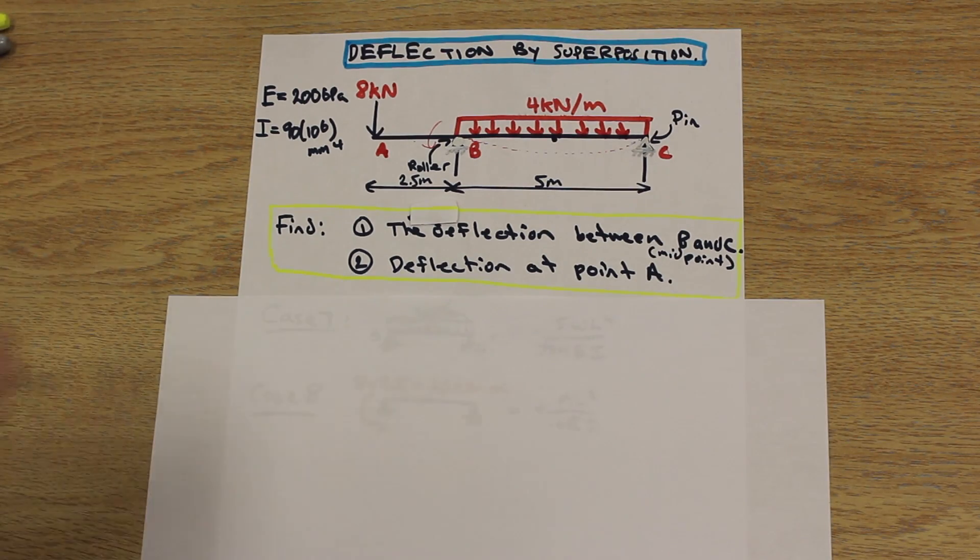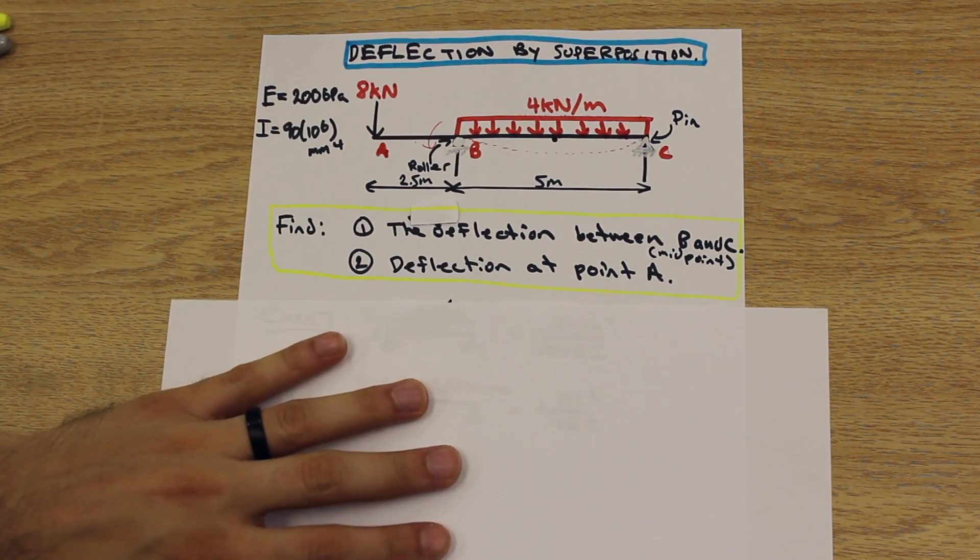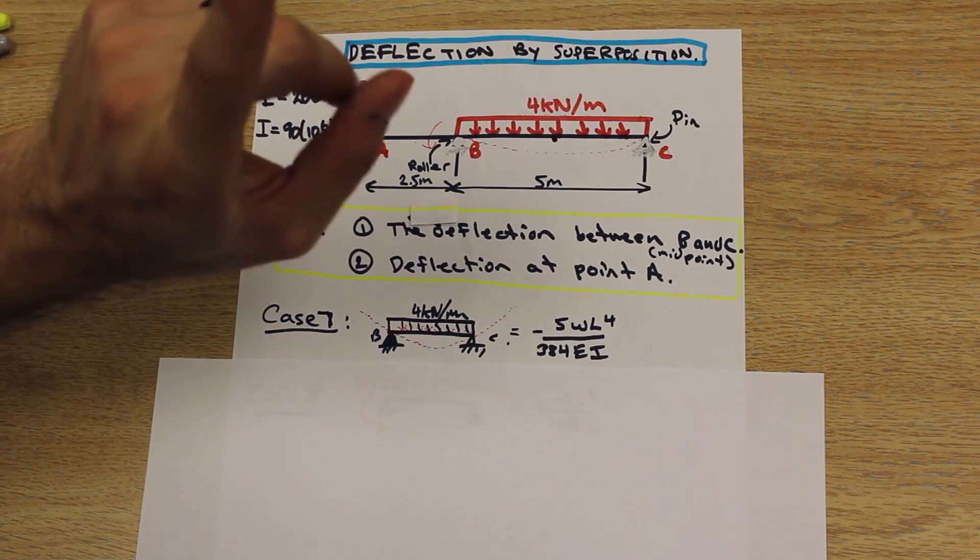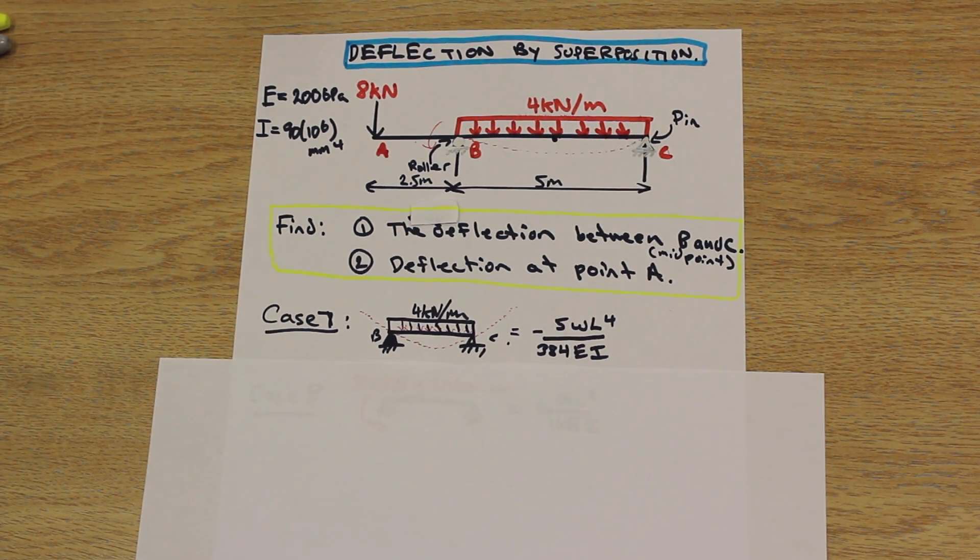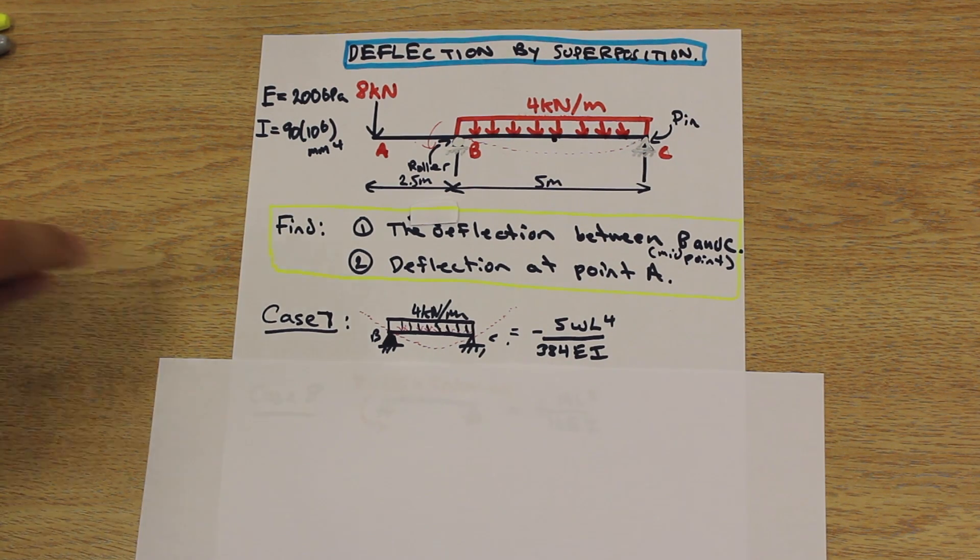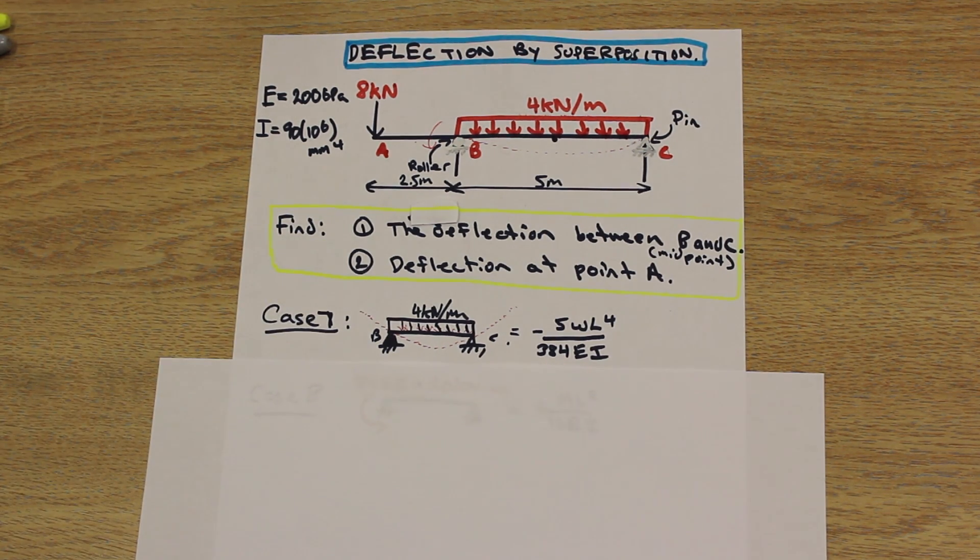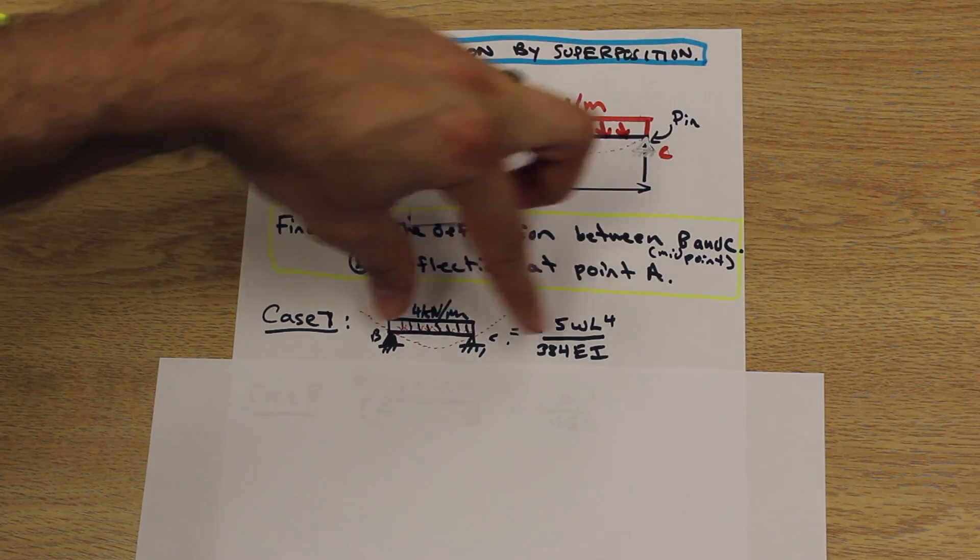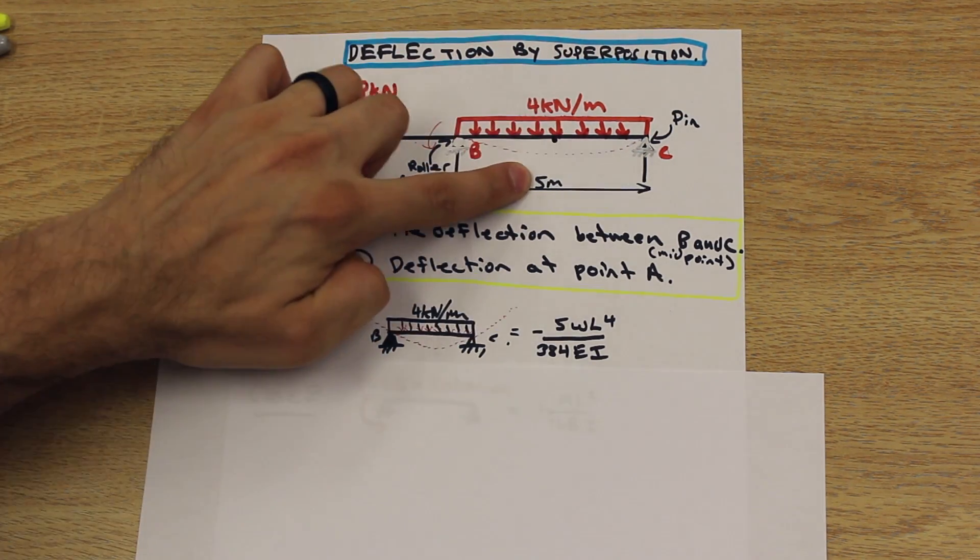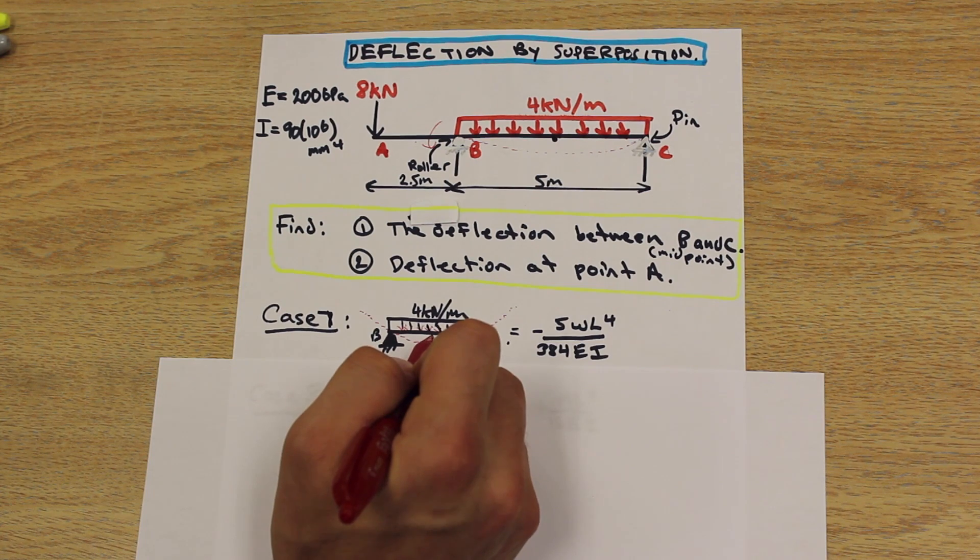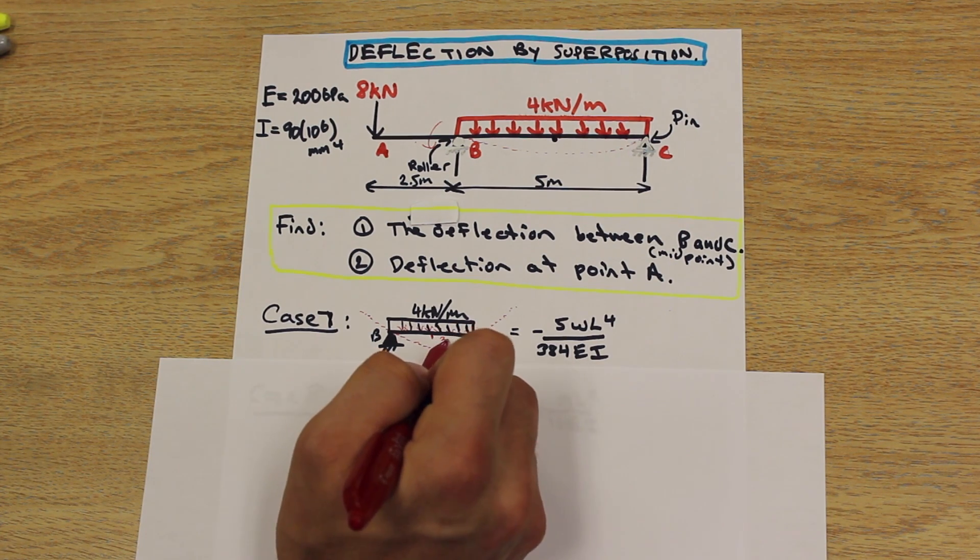So let's get started. And I've gone to the table and I've taken this distributed load here as our first case, and I've labeled that case 7 because it's case 7 in the table. So take a look at the table and you'll see what I mean by that. And in the table, we have a maximum deflection. And we see that the maximum deflection happens at x equals L over 2.